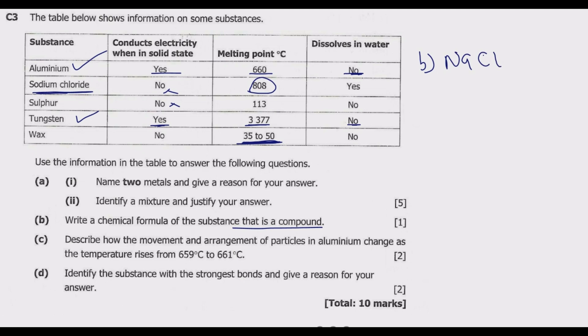Question C: Describe how the movement and arrangement of particles in aluminum change as the temperature rises from 659 degrees Celsius to 661 degrees Celsius. When you look at the melting point is 660. So we have 660 here, then we have 661, then we have 659 degrees Celsius. So at this point, this one is in liquid, this one is in solid.